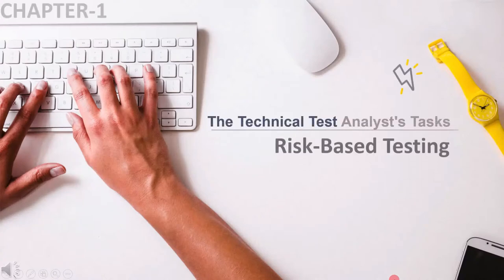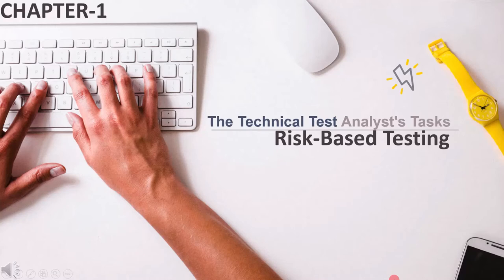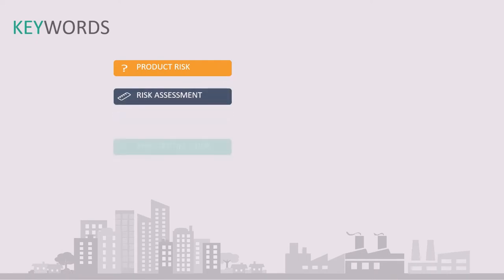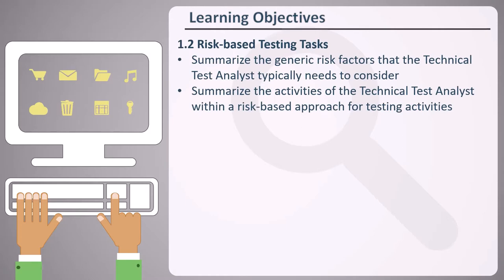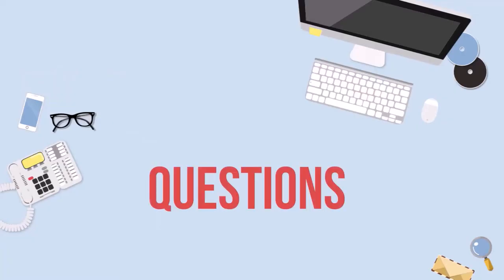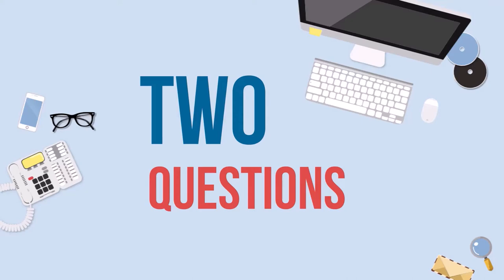Welcome to Chapter 1: the Technical Test Analyst's Tasks in Risk-Based Testing. At the end of this chapter, you must know these keywords: Product Risk, Risk Assessment, Risk Identification, Risk Mitigation, and Risk-Based Testing. Whenever you come across these terms, pay more attention towards them. We have two learning objectives which will be addressed in the upcoming lectures. From this chapter, you will get two marks.